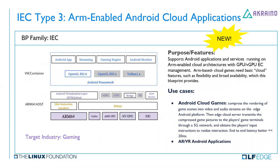IEC Type 3 is about Android in Cloud — a popular industry in China. It runs on ARM-enabled cloud architecture with GPU and vGPU EC management. The ARM-based cloud games need basic cloud features. The use cases include Android cloud games — more for the hyperscaler and web scaler — and also the ALVR Android applications needed by both telcos and hyperscalers.